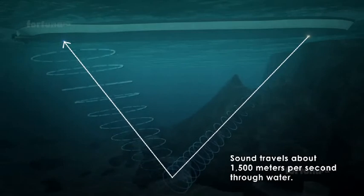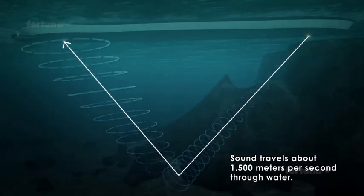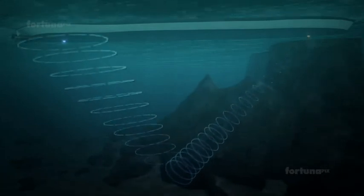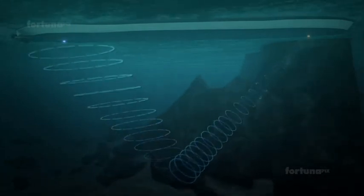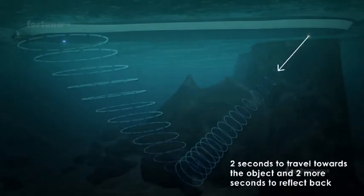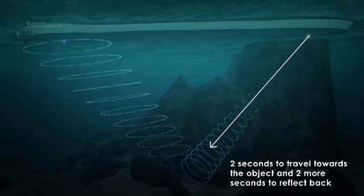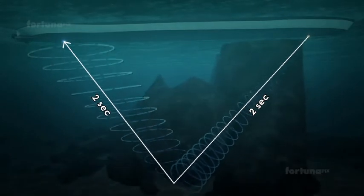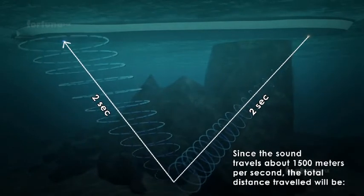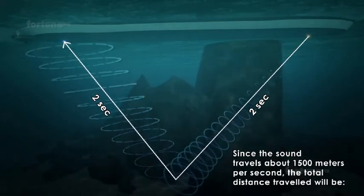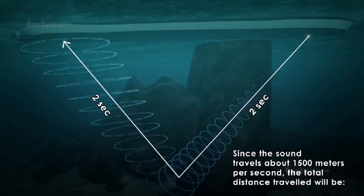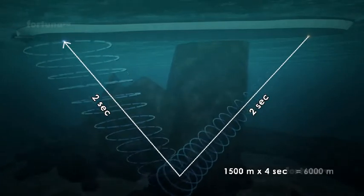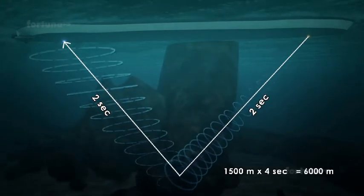Sound travels about 1500 meters per second through water. Consider sound waves returning after 4 seconds. The sound wave takes 2 seconds to travel towards the object and 2 more seconds to reflect back. Since the sound travels about 1500 meters per second, the total distance traveled will be 1500 meters times 4 seconds, which equals 6000 meters.